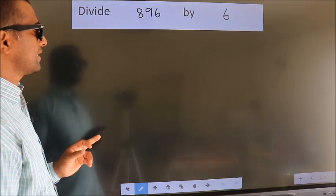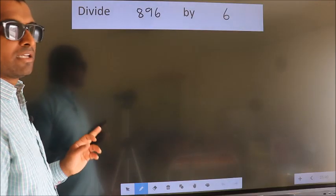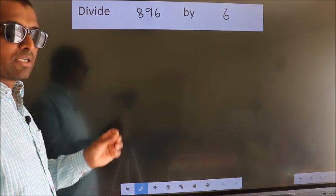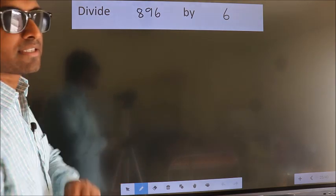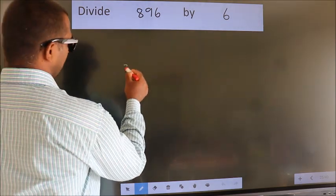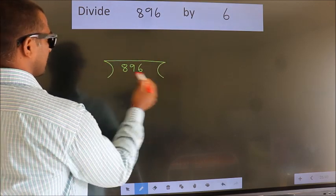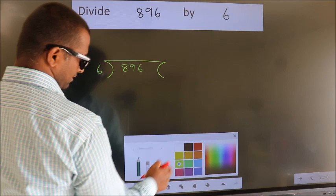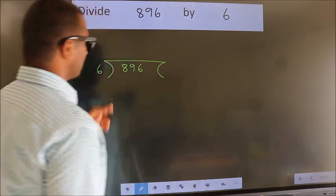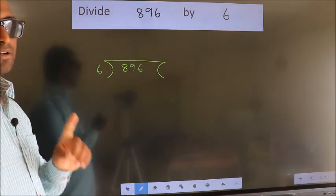Divide 896 by 6. To do this division, we should frame it in this way: 896 here, 6 here. This is your step 1.